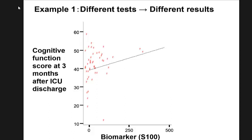So why is selecting the right statistics important? This is data from an ICU delirium study. We collected data from patients admitted to ICU, and a biomarker called S100 was drawn from blood at ICU admission. We then followed patients discharged from ICU and sent assessors to patient residences to conduct a cognitive test, to see whether the ICU biomarker value is predictive of three-month cognitive functionality.